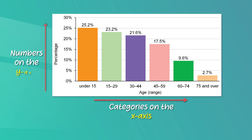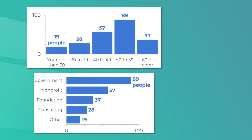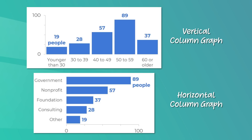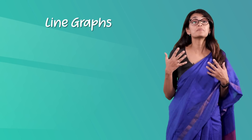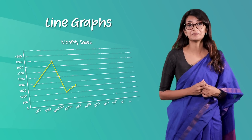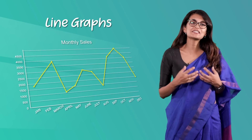Generally, a bar graph has categories on the x-axis and numbers on the y-axis, so you can compare statistical data between different groups. The bar graph shows which category is the largest and which is the smallest. Each group should be independent so that changes in one do not influence the others. The bars or columns can be drawn either vertically or horizontally.